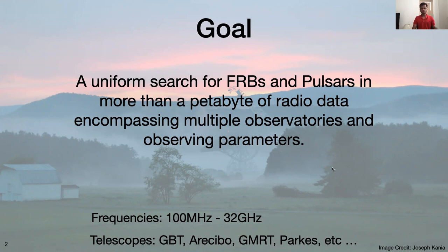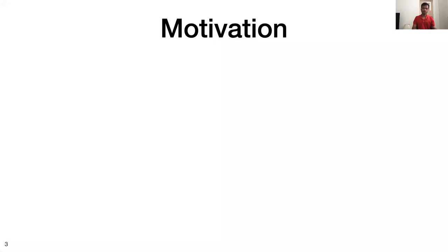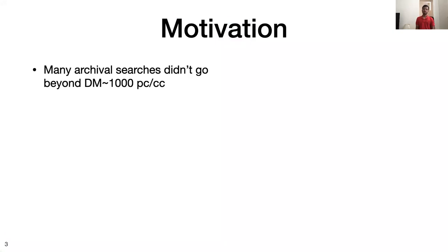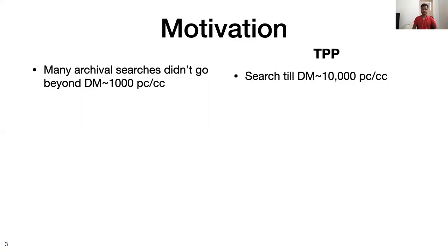There are lots of motivations for a project like this. Previously, many of the archival searches have not been done till a really high DM value — they were searched till a DM of around 1000 or 1500, which means they might have missed some FRBs which are high DM. In the case of TPP, we're going to search uniformly till a DM of around 10,000, thereby including all those high DM FRBs as well.